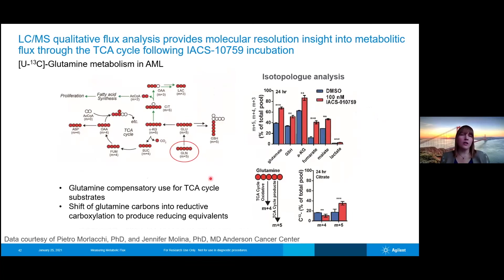If we take a look at the glutamine labeled case, what we see is that while glucose isn't really flowing through the TCA cycle, glutamine is actually able to continue to flow through the TCA cycle when the cells are treated with this IACS compound.